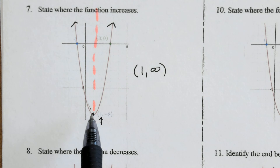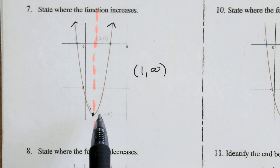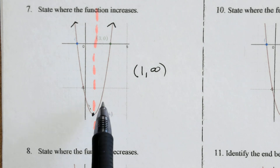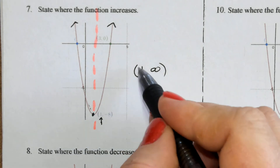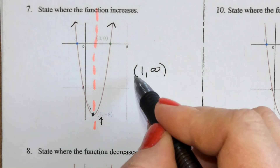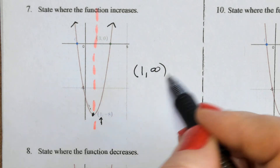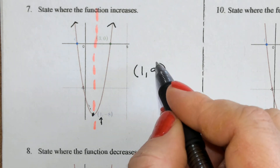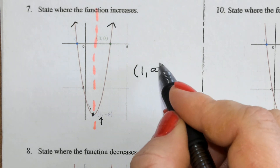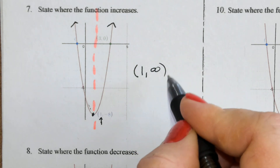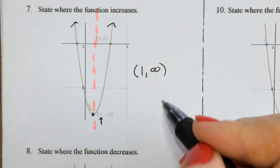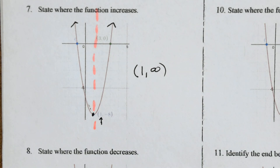So after it leaves and moves to the right of where x is 1, it begins to increase. For that reason, we keep a parenthesis on the 1. You cannot touch a positive infinity, so it also has a parenthesis.